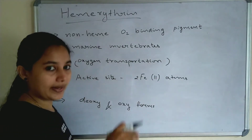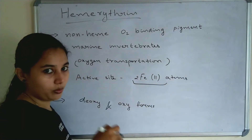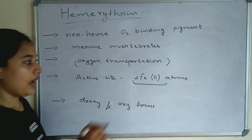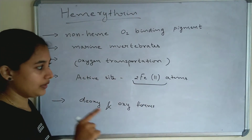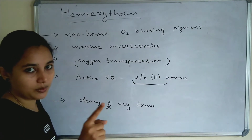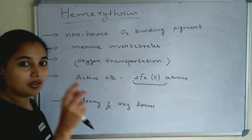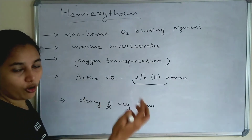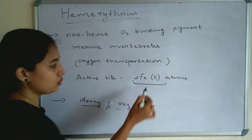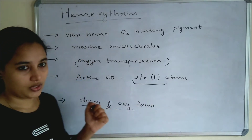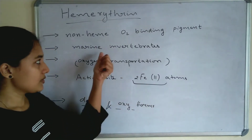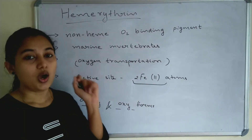The active site metal atom of hemerythrin is iron. It doesn't contain a heme group, but the active metal atom is iron in the +2 oxidation state. Two Fe atoms are present in hemerythrin — compared to hemoglobin which has 4 heme groups, and myoglobin which has one. Hemerythrin can form deoxy and oxy forms, that is reduced and oxidized forms, with oxidation states of +2 and +3 respectively. It is seen in marine invertebrates and its function is oxygen transportation.